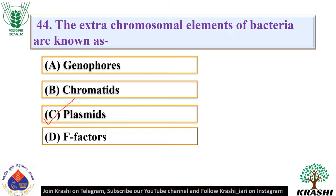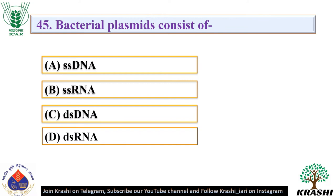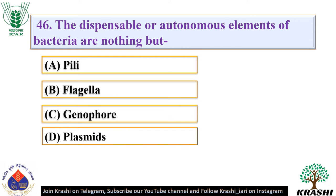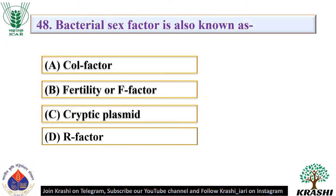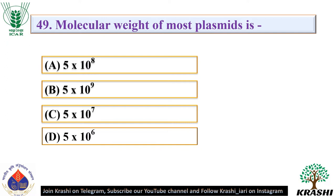Question number 45: Bacterial plasmids consist of — they consist of double-stranded DNA. Question number 46: The dispensable or autonomous elements of bacteria are nothing but — they are plasmids. Question number 47: A mutation which changes two or more different phenotypic properties is known as. The correct answer is option A — pleiotropic. Question number 48: Bacterial sex factor is also known as — it is also known as fertility or F factor. Question number 49: Molecular weight of most plasmids is. The correct answer is option C — 5 × 10⁷.